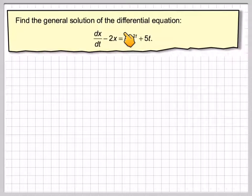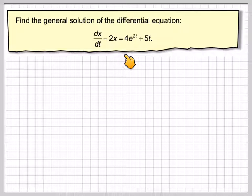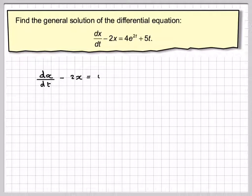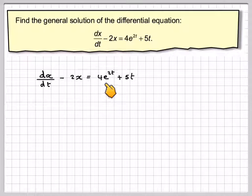Find the general solution of the differential equation dx/dt minus 2x is equal to 4e to the 2t plus 5t. So we've got dx/dt minus 2x is equal to 4e to the 2t plus 5t.